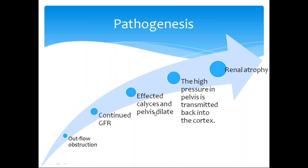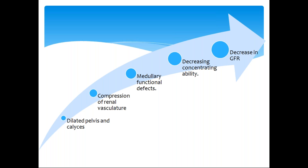This pressure accumulation leads to the calyces becoming dilated. The high pressure in the pelvis is transmitted back into the cortex, leading to compression of the renal vasculature. Outflow will be obstructed but there will be continued filtration by the kidneys, so this leads to high pressure accumulation. This pressure is back-transmitted into the cortex, leading to atrophy. Compression of the renal vasculature leads to medullary functional defects, resulting in decreased concentrating ability of the kidneys.